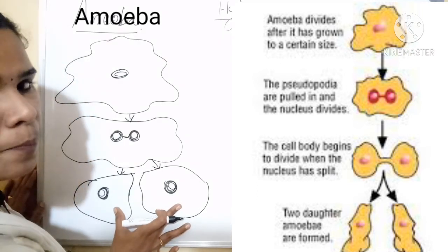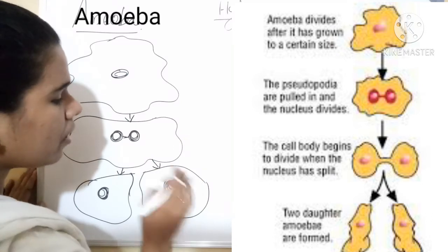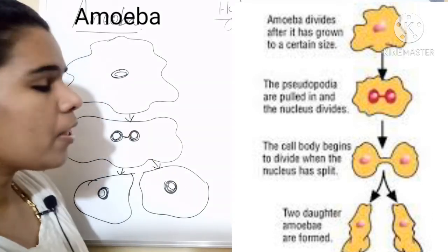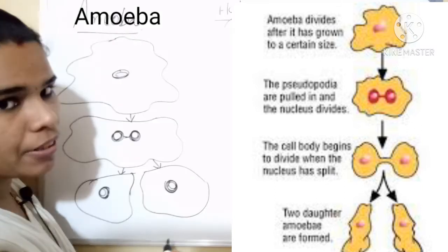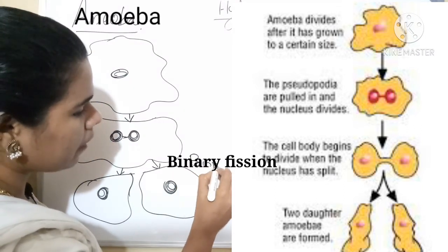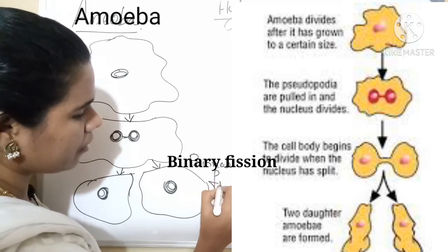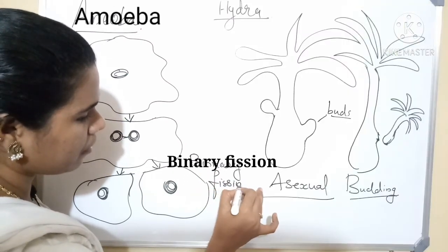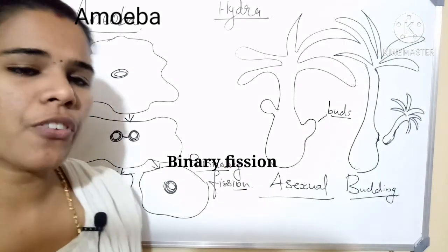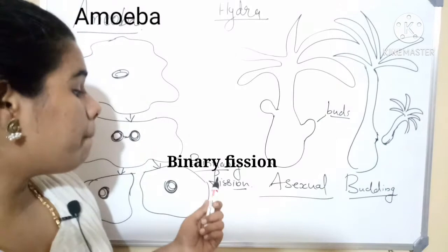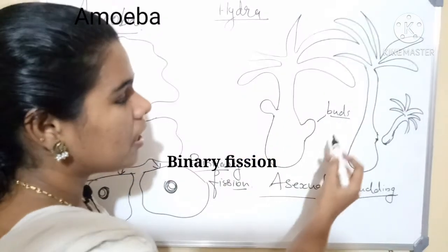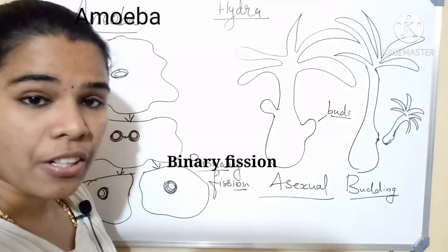One individual is divided into two new individuals. This kind of asexual reproduction is called binary fission. In the case of Amoeba, asexual reproduction occurs through the binary fission process. In the case of Hydra, asexual reproduction occurs through the budding process.